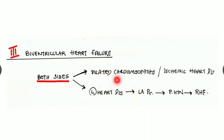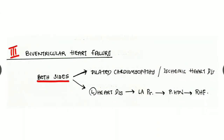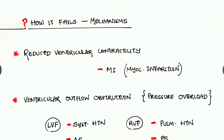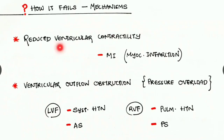The third type, biventricular heart failure, means both sides are affected. It can be due to diseases like dilated cardiomyopathy or ischemic heart disease, or it can be due to left heart disease causing left atrial pressure rise, progressing to pulmonary hypertension, which in turn causes right heart failure.